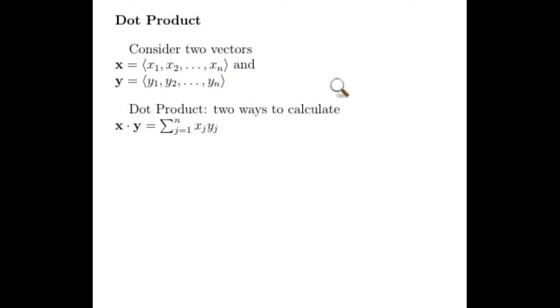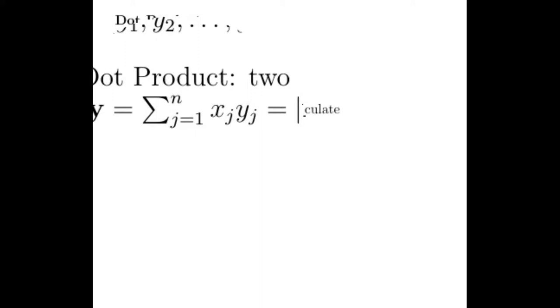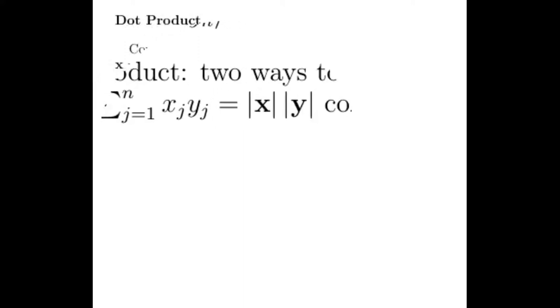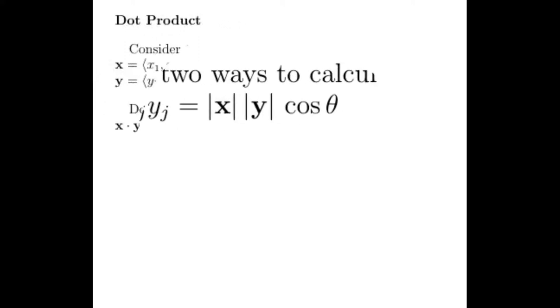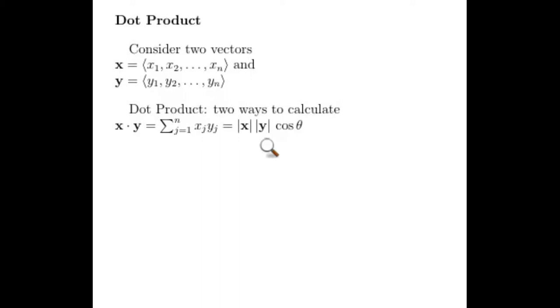One of the big powers that come from dot products is that it can be calculated in two different ways. The first way is that the dot product of x and y is the sum of the products of the components. The second way is the length of x times the length of y times the cosine of the angle between them. So those are the two ways.